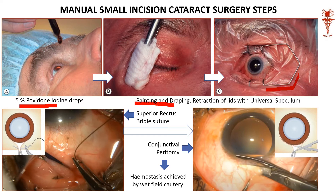Once painting and draping are done, we use a wire speculum to retract the lids. Then we use an instrument called a dastur to hold the superior rectus and take a brittle suture in the superior rectus. It is called a brittle suture because it is not tied or knotted — it is just kept for holding on to the superior rectus to control the globe, analogous to how a jockey controls a horse.